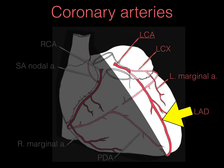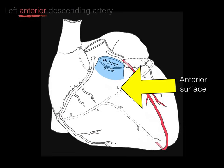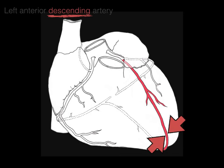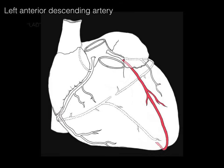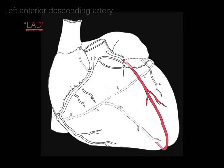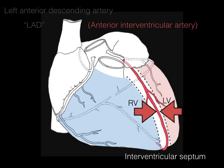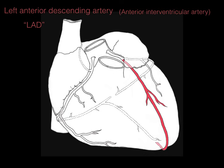The LAD is the left anterior descending artery. Left because it comes off the left coronary artery; anterior because it's on the anterior surface of the heart; descending because it descends on the front of the heart. It's abbreviated LAD — L for left, A for anterior, D for descending. It's also called the anterior interventricular artery because it runs on the anterior surface of the interventricular septum between the right and left ventricles. So three names: left anterior descending artery, anterior interventricular artery, and the LAD.